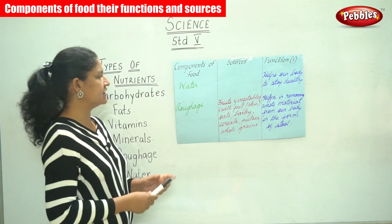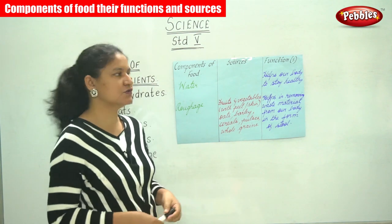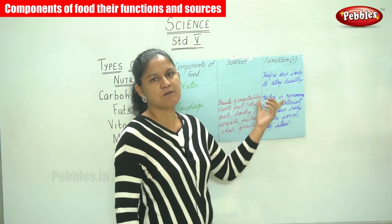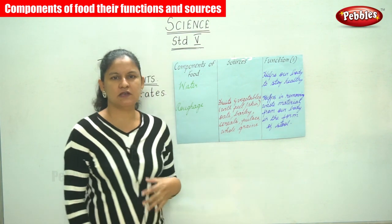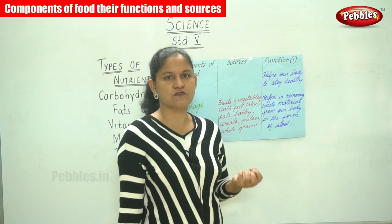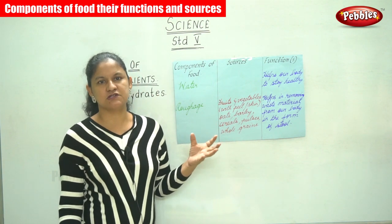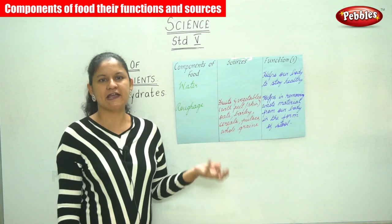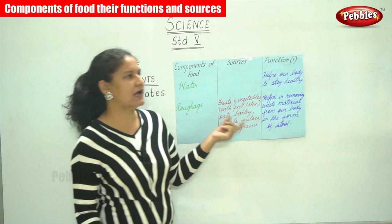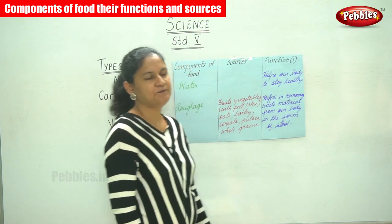Moving on to the next two components needed for our body. The first is water. Most of our body is composed of water, so we need to drink a lot of water to keep our body and skin hydrated. The function of water is it helps our body to stay healthy.